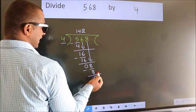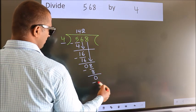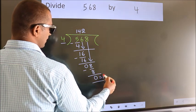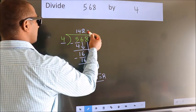No more numbers to bring it down. So we stop here. This is our remainder. This is our quotient.